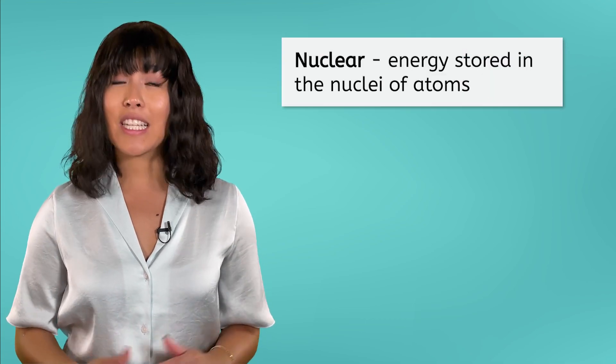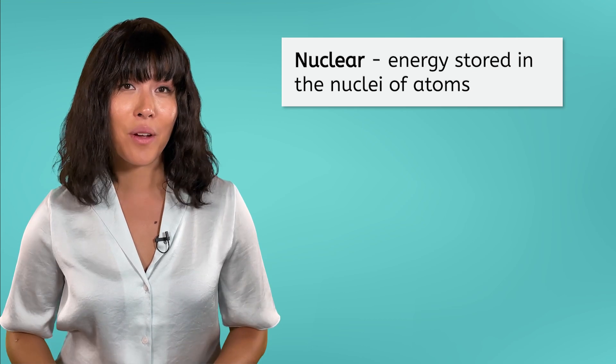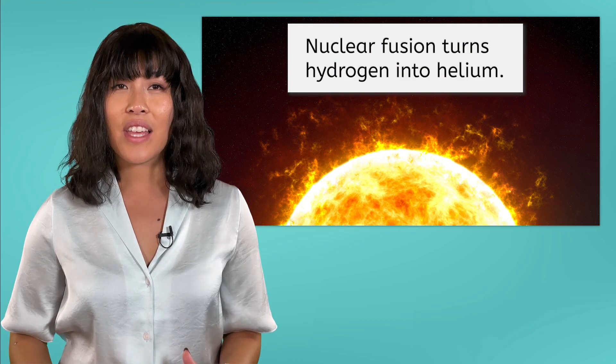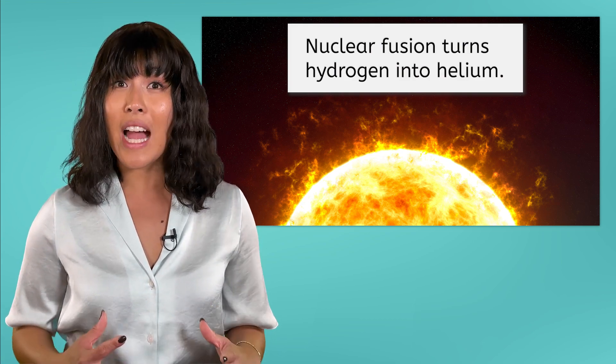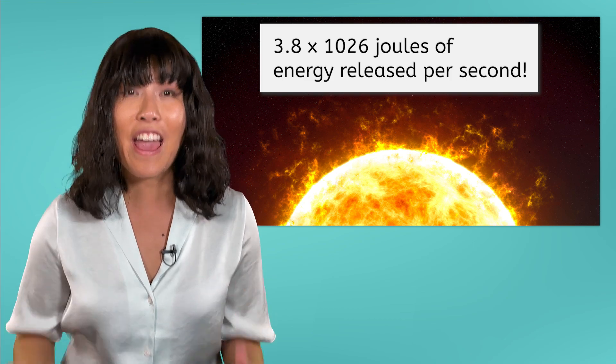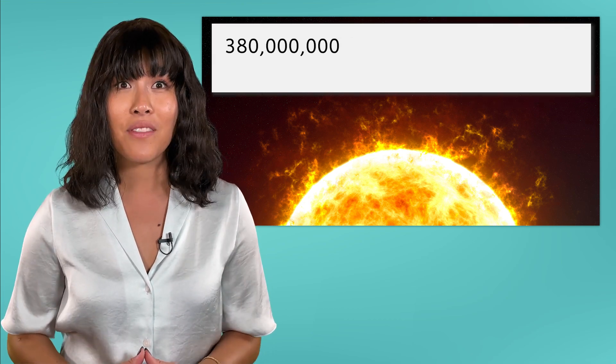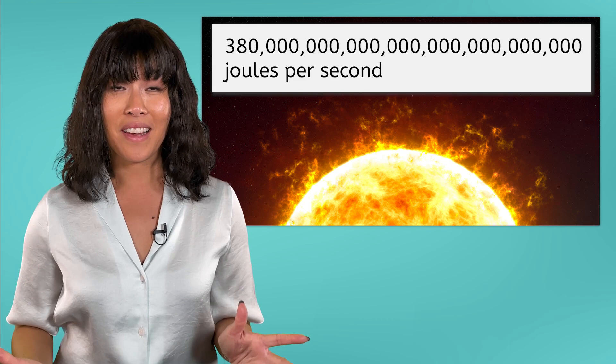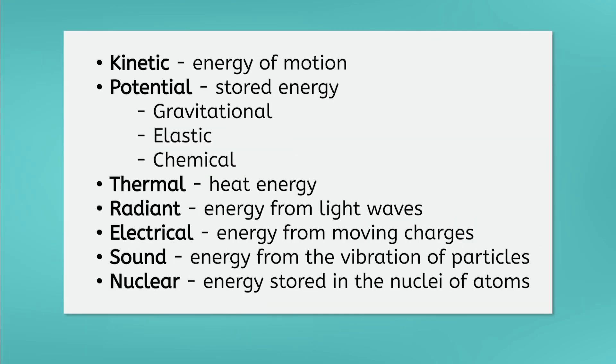The last type of energy we'll cover today is nuclear energy. This type of energy is stored in the nucleus of an atom, and when it is released, the results can be dramatic. The Sun, for example, constantly undergoes a nuclear fusion reaction that turns hydrogen atoms into helium atoms. This reaction releases 3.8 times 10 to the 26 joules of energy every second. To put that number in perspective, it's many times larger than the total amount of energy consumed on Earth in an entire year. Did you get all of the energy forms recorded in your notes? Here they are again, in case you missed one. Pause the video and double check your list before we wrap this up.